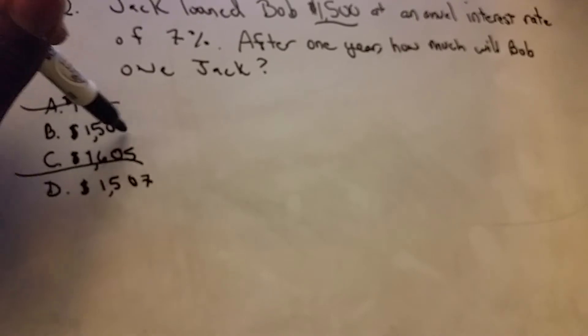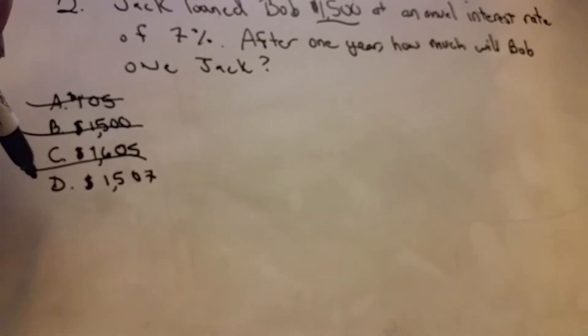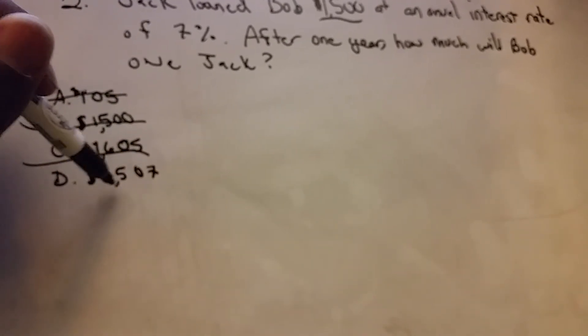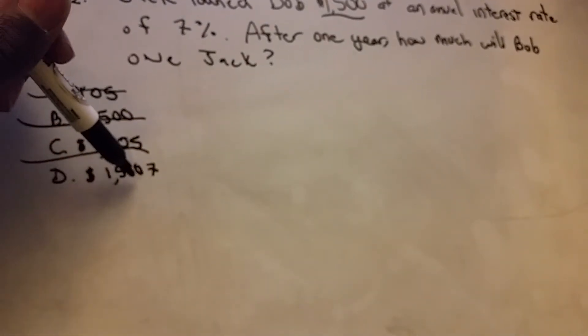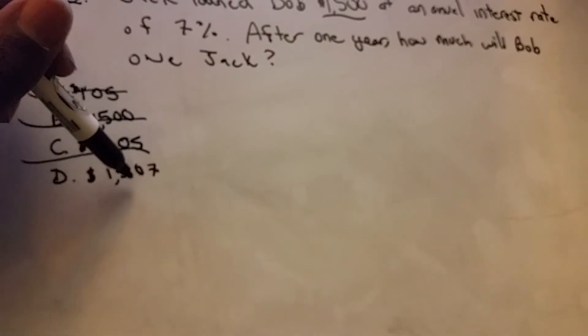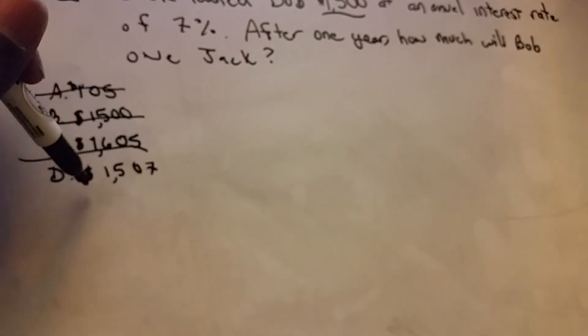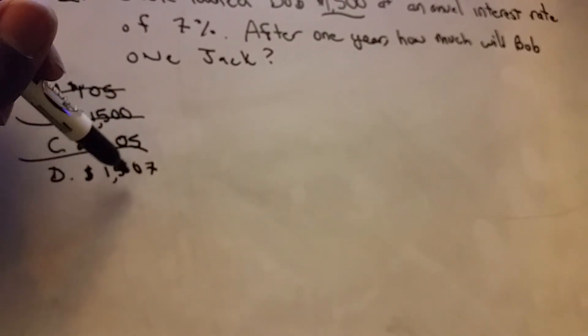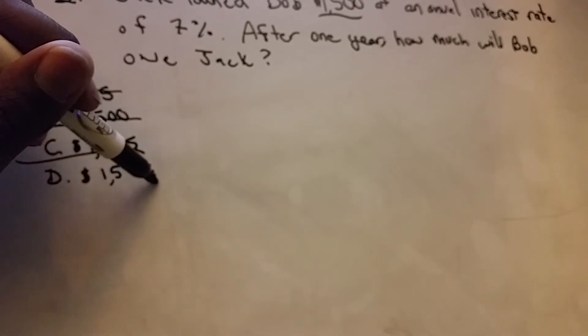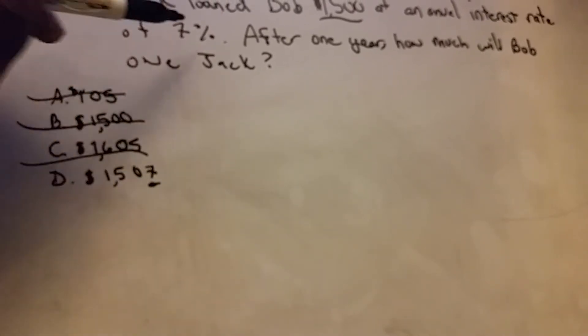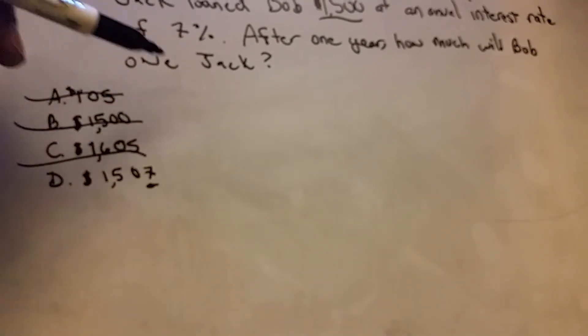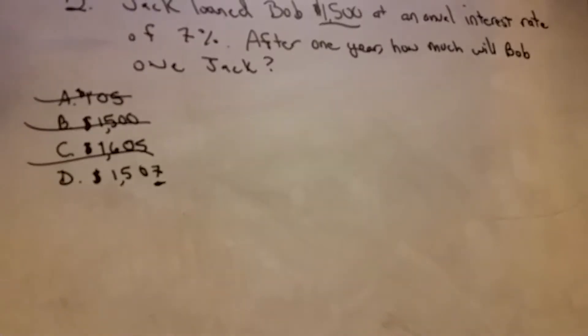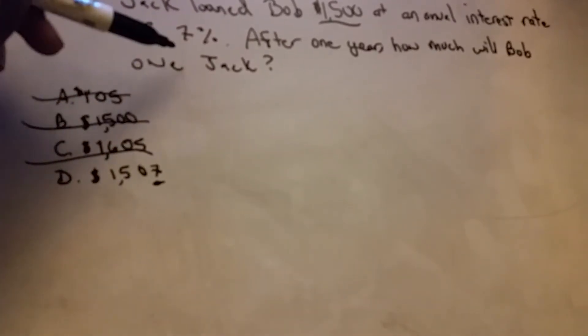So the amount plus 7% is going to be more than $1,500, so you cross that one out. And $1,507—I know that $7 is only $7 more than the original amount. So at 7%, that would have to mean that the loan would be $100, because 7% of $100 would be $7.